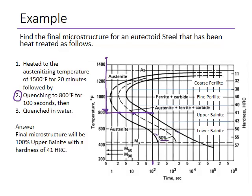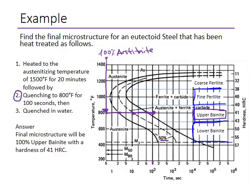By waiting 100 seconds we cross the 50% mark and reach the end line, consuming 100% of the austenite. So the transformation gives us 100% upper bainite. In this diagram we have coarse pearlite in the upper region, fine pearlite below that, then upper bainite and lower bainite regions. This end point at 800°C lies in the upper bainite region.